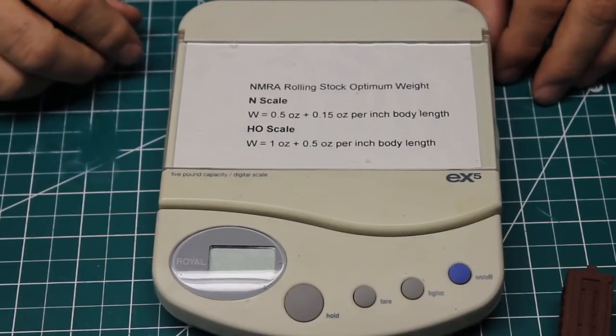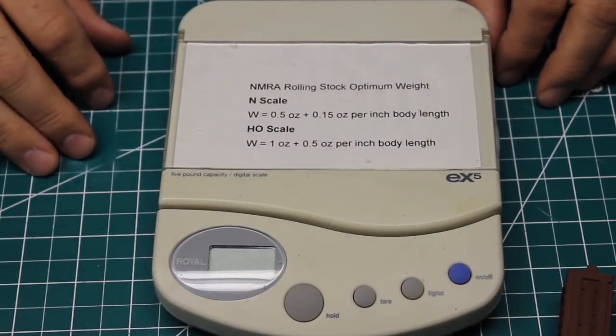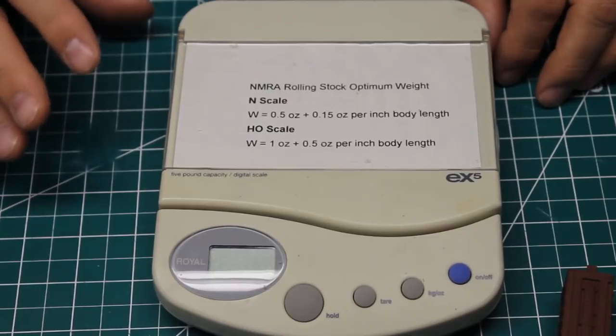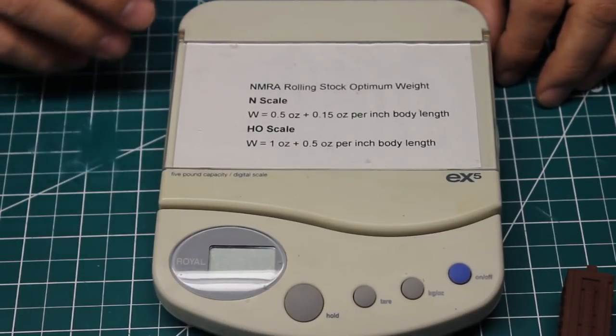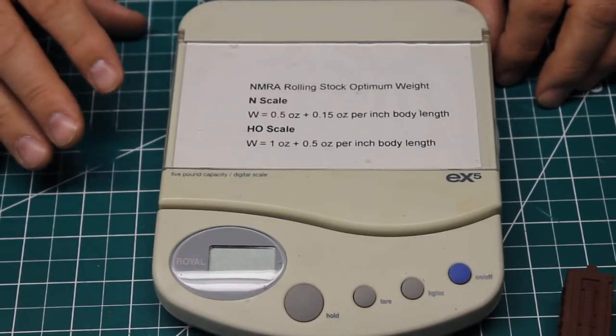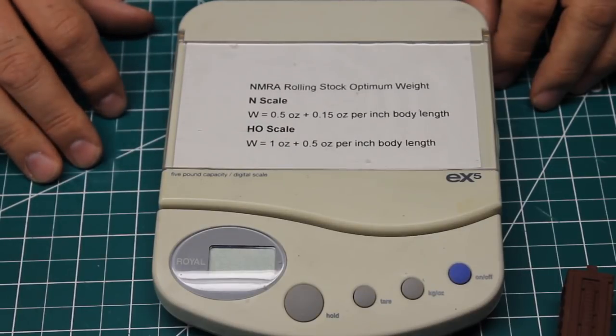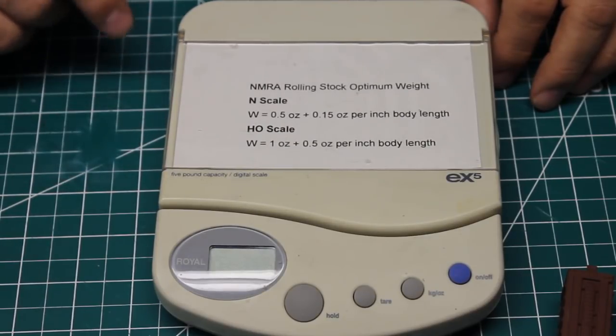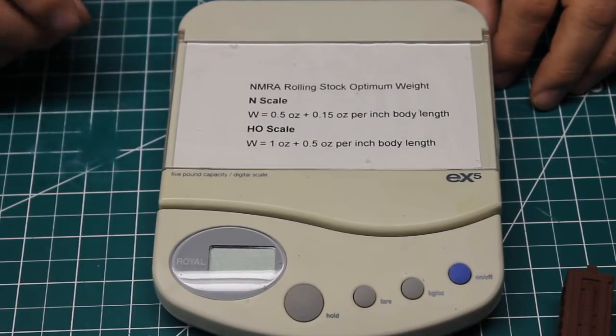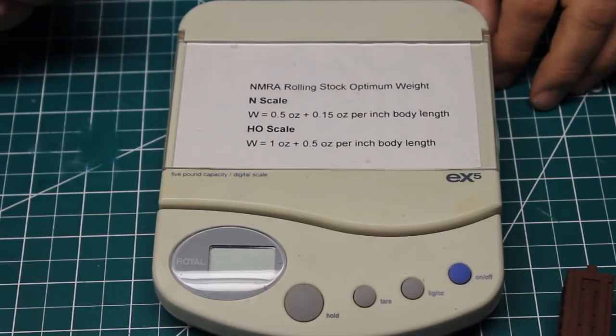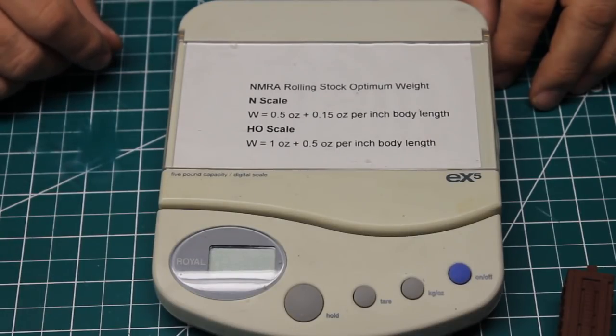One final way that you can upgrade and optimize your rolling stock is by giving them their proper weight that they need. Now I'm planning a whole video just on weighting cars so I'm not going to spend a lot of time talking about this but if you need some more information Eric Hall over at imrro.com on YouTube just did a video on weighting cars and about told you about all the information that you need to know there about the NMRA recommended practice and how to go about that so I recommend that if you need that information right away.